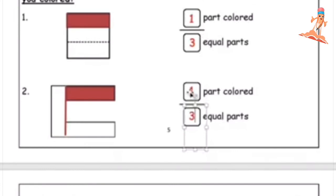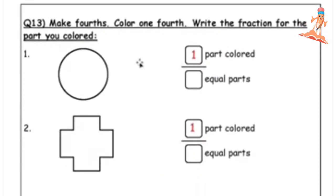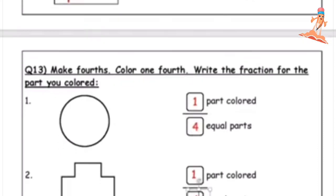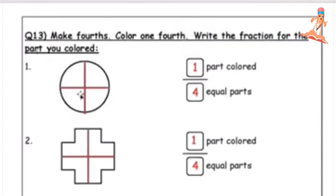Now make fourths, color one fourth, and write the fraction for the part you colored. We are going to make fourths like this, so it is going to be one fourth. I will make four equal parts and color one. You can see I have made four equal parts — now color one part of the four equal parts and write it as one part colored in four equal parts.